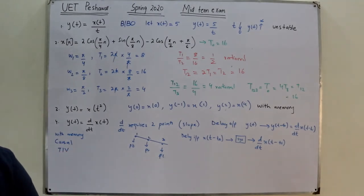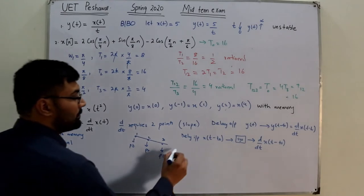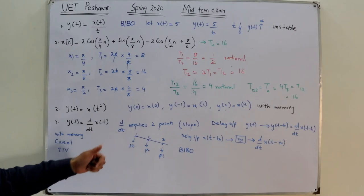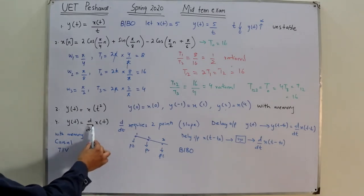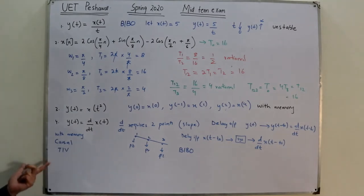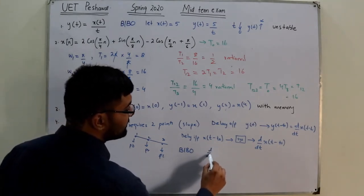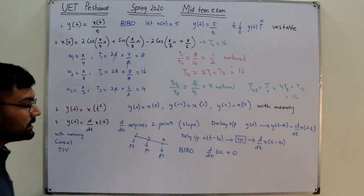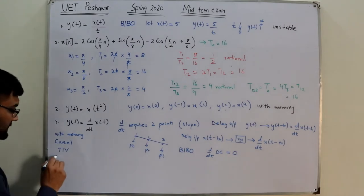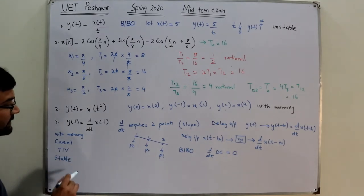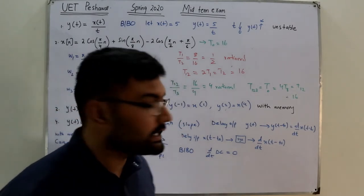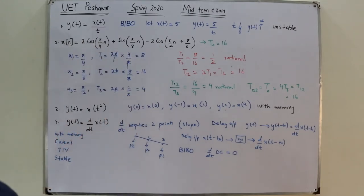For stability: using the BIBO criteria, a bounded input such as a DC value has a derivative of zero, which is bounded. You can also verify with the ramp, impulse, or unit step functions. In all cases the output is bounded, so this is a stable system.